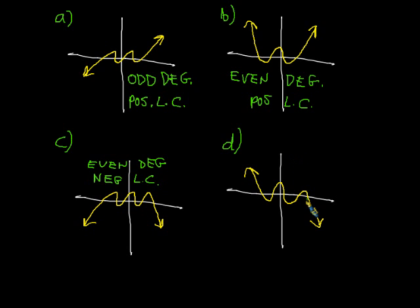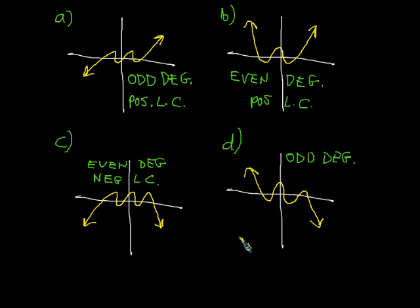And finally, this last one looks a bit like a negative sloping line. Lines are first degree polynomials — linear equations are first degree polynomials — and 1 is an odd number, so for that reason this must be an odd degree polynomial. And because it looks like a negative sloping line, this must have a negative leading coefficient. Hopefully you got those right. Soon we'll be graphing these polynomials, and having this information will be very helpful when we try to figure out if we have the complete graph and what to do with the part that seems to be missing. Thank you.